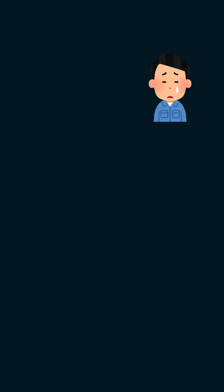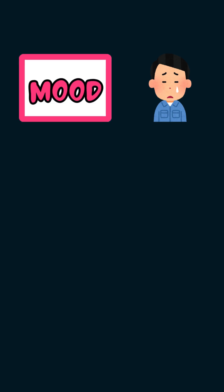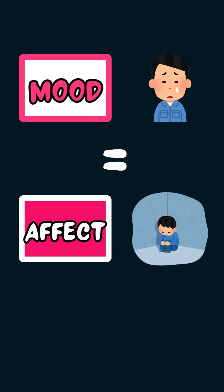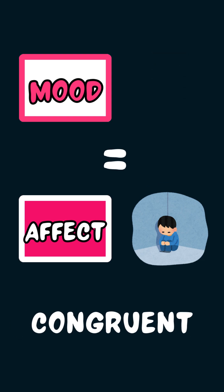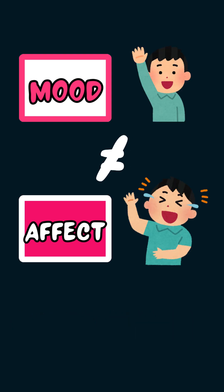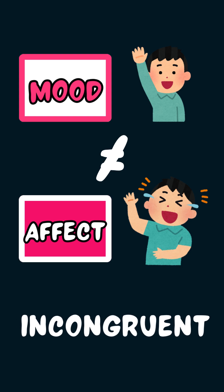So if a patient says they're sad — i.e. have a low mood — and they look sad — i.e. have a blunted affect — the affect and mood are congruent. But if they say they're fine and you note that they're laughing inappropriately, that's incongruent.